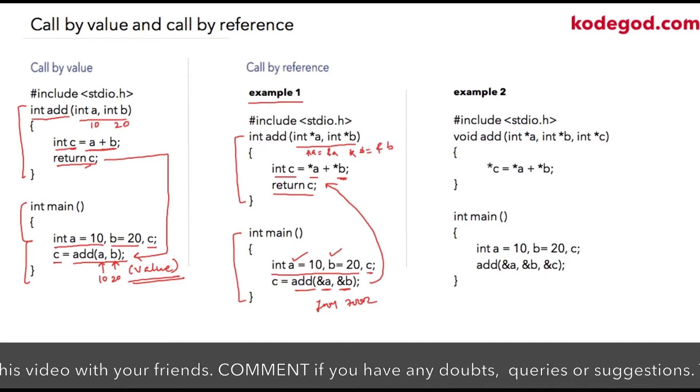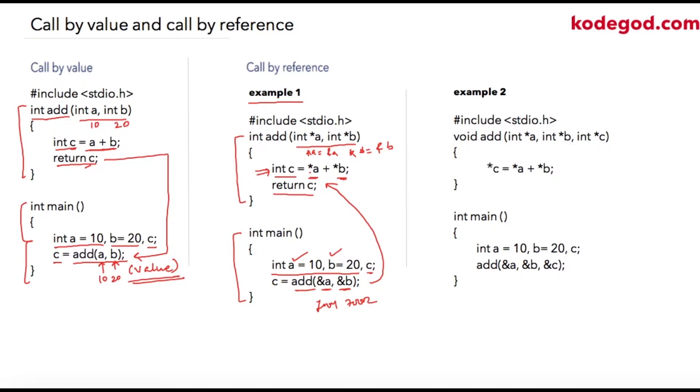Okay, so in this statement we need to read it as star replace a with address of a, and we know that we need to read star as a value at operator. So value at address of a plus value at address of b. So we are adding 10 and 20 using pointer variables which are pointing to address location of these variables.